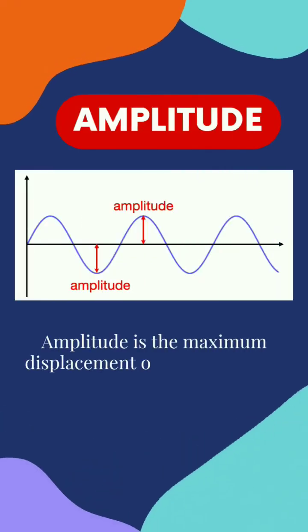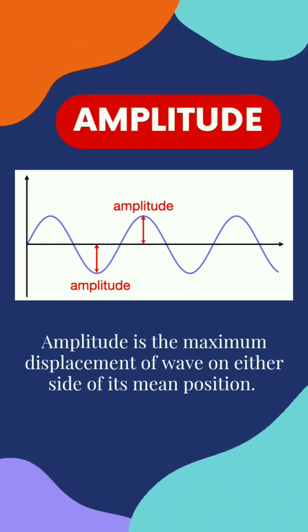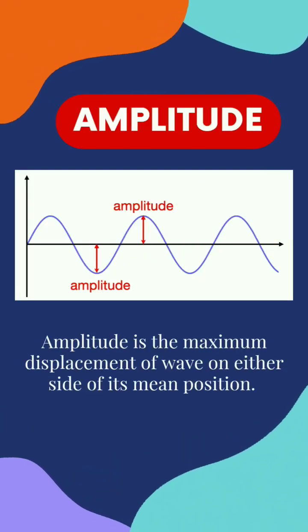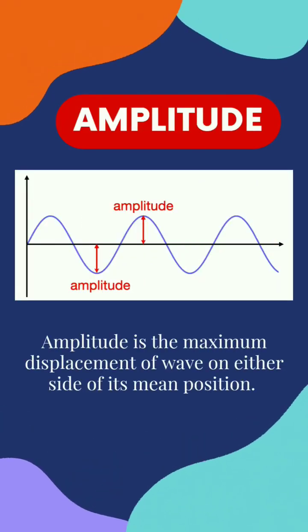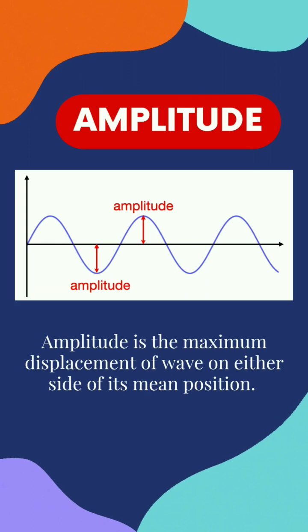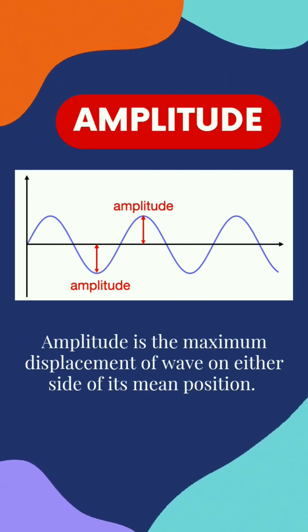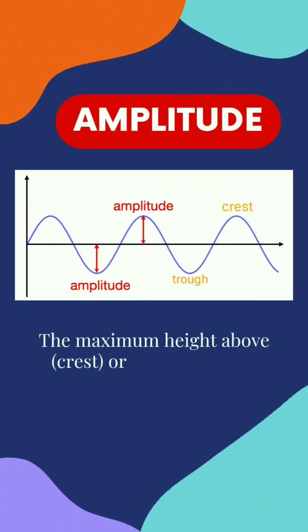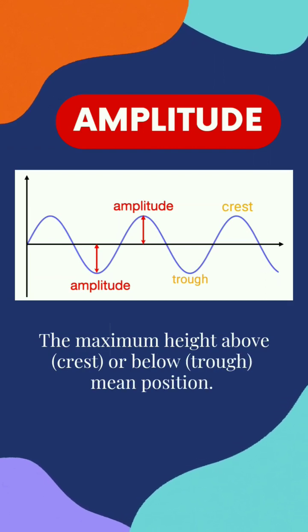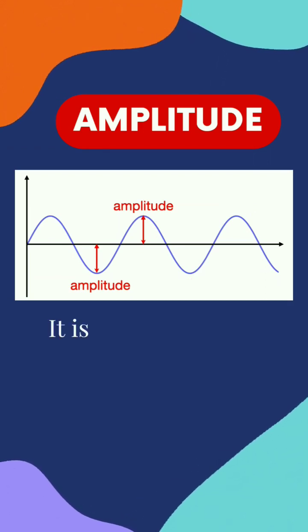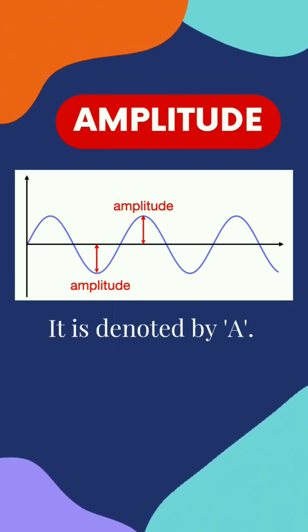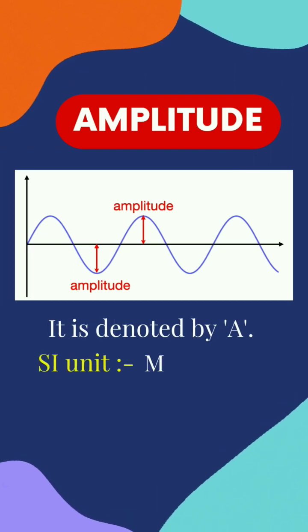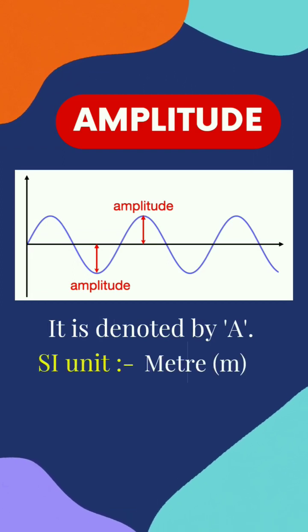As you can see from the diagram, amplitude is the maximum displacement of a wave on either side of its mean position, or we can say the maximum height above or below the mean position. It is denoted by the letter A and its standard unit is the meter.